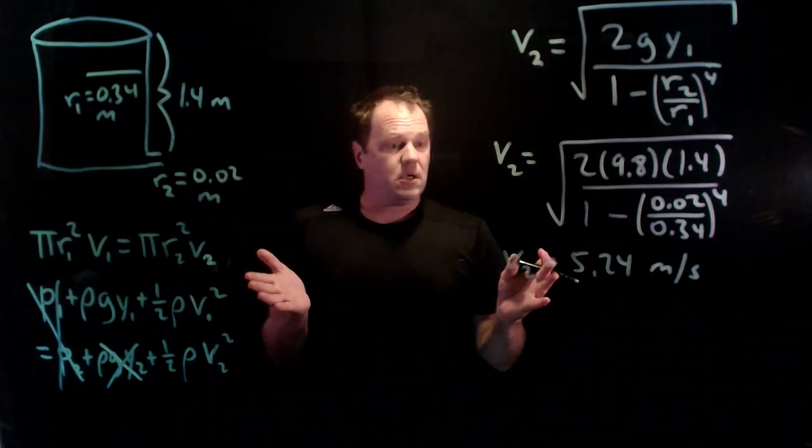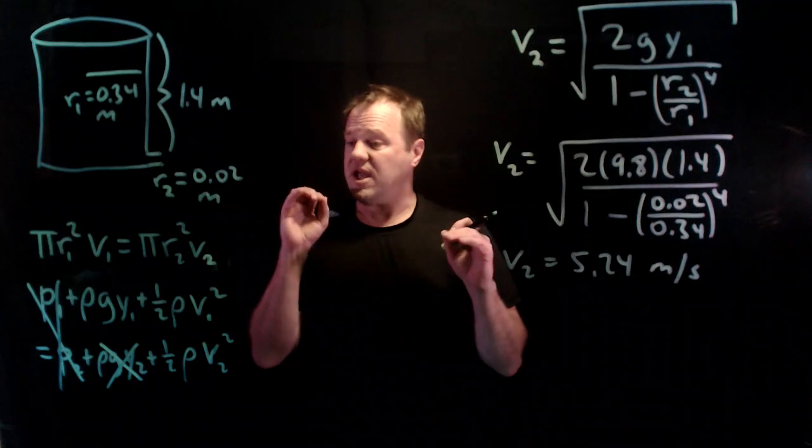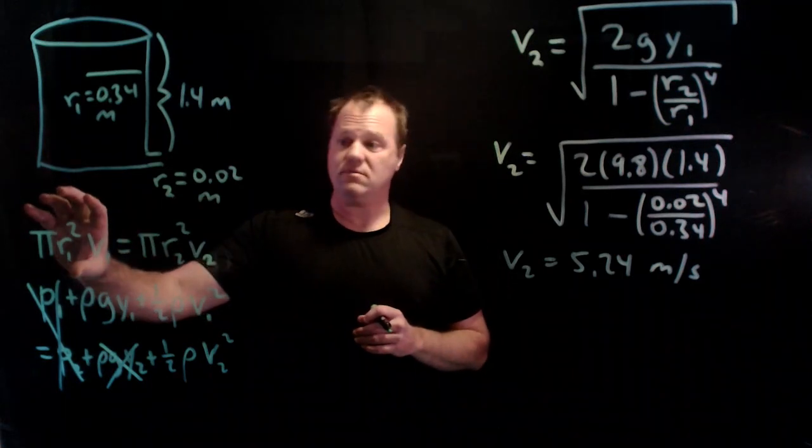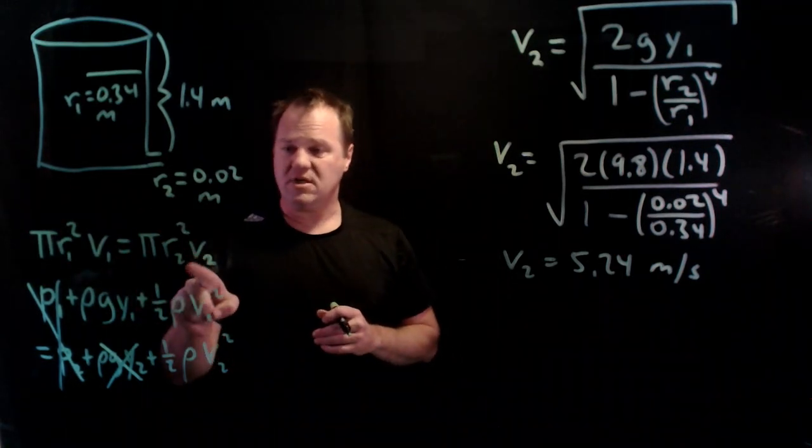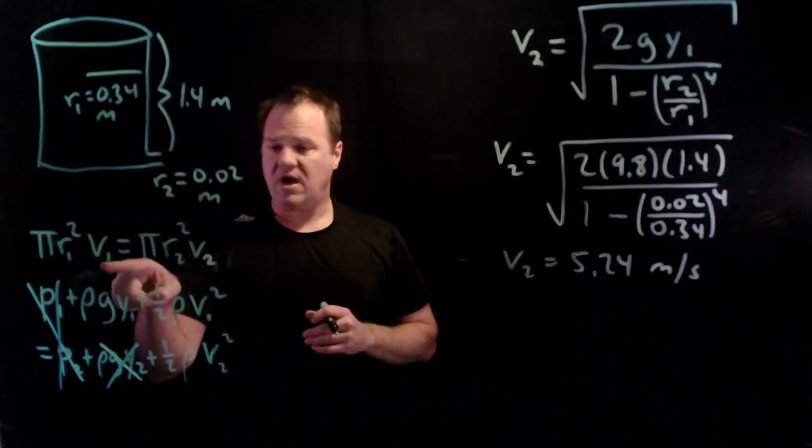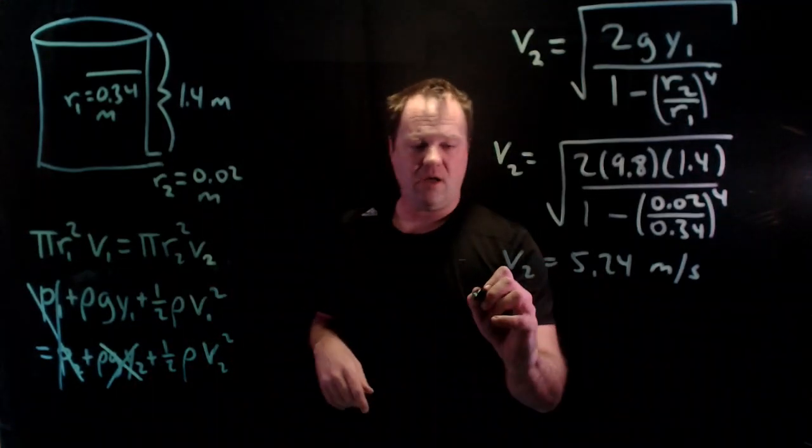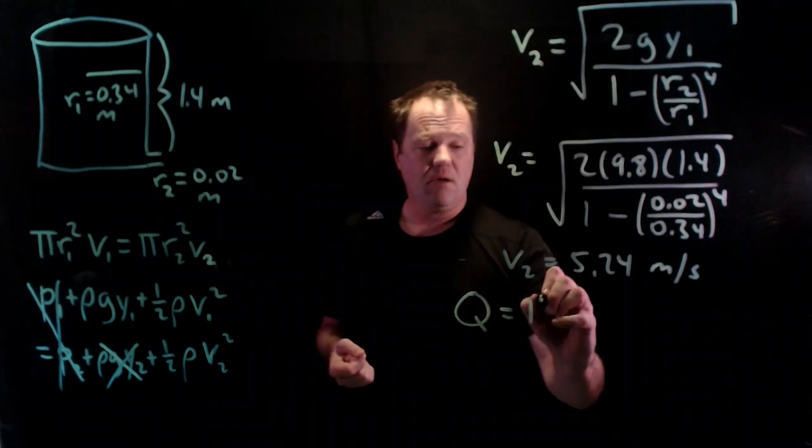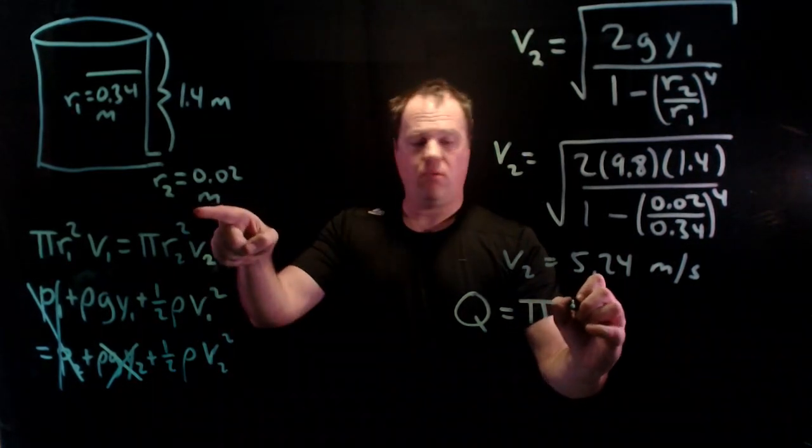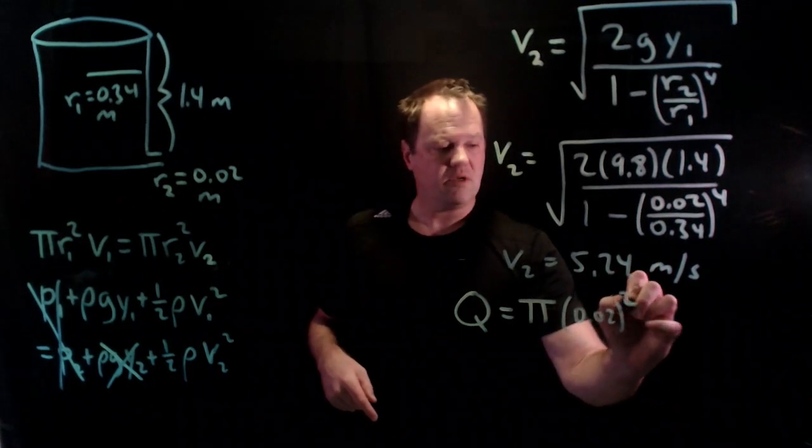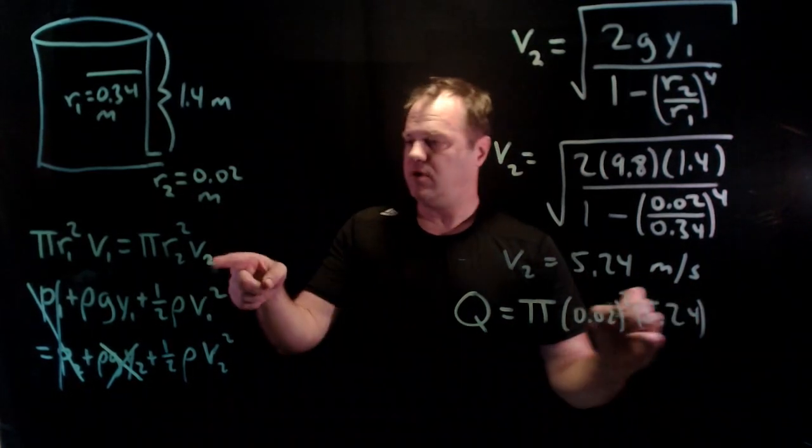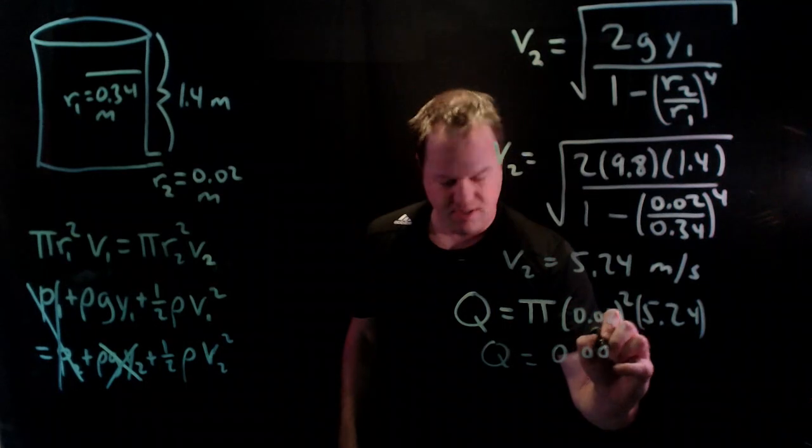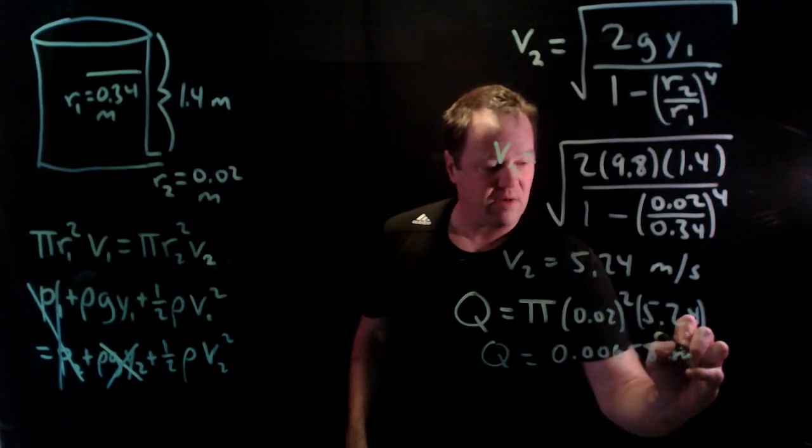Let's calculate what the volume flow rate is. Both of these are volume flow rates. Let's use this one since we don't have v1, we have v2. The usual symbol is Q, volume flow rate, or Δv/Δt, would be πr² which was 0.02 times 5.24 which is v. I throw that into my calculator and I get 0.00658 cubic meters per second.